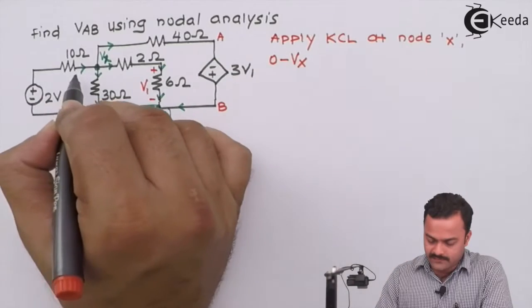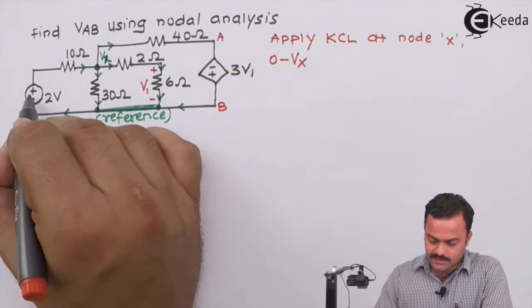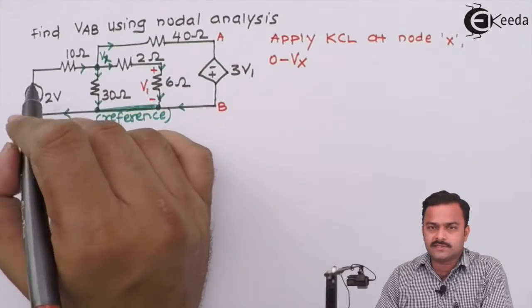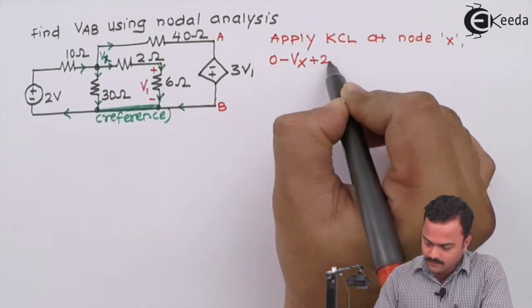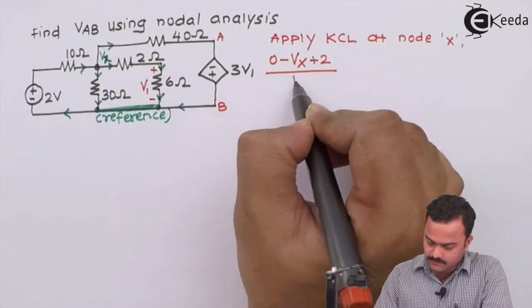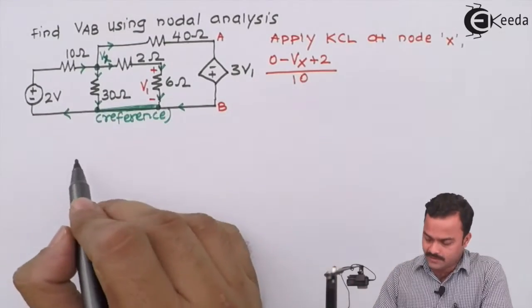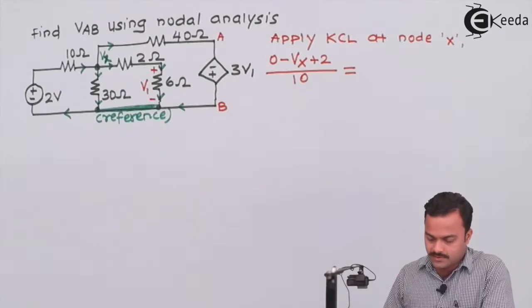In the direction of current, there is a voltage source with changing the polarity minus 2 plus in the current direction. So minus 2 plus is nothing but the voltage rise. So it is plus 2 upon the resistance of this branch, which is 10. So this is the incoming current.